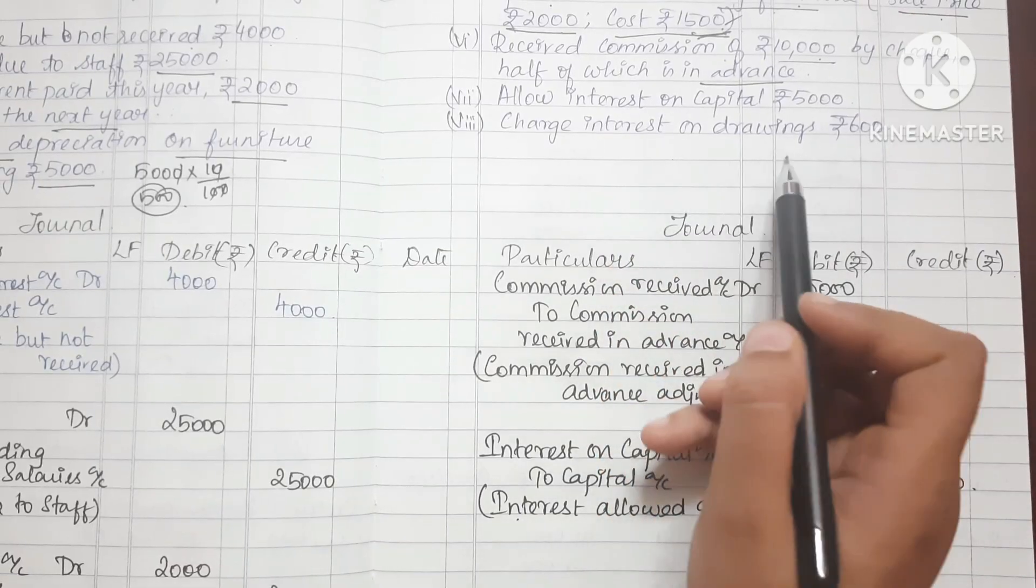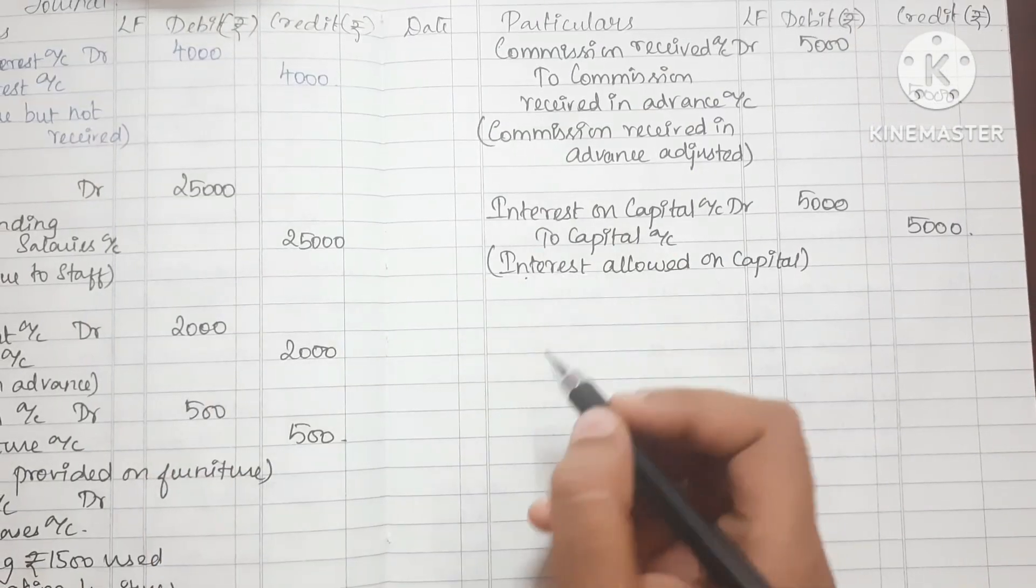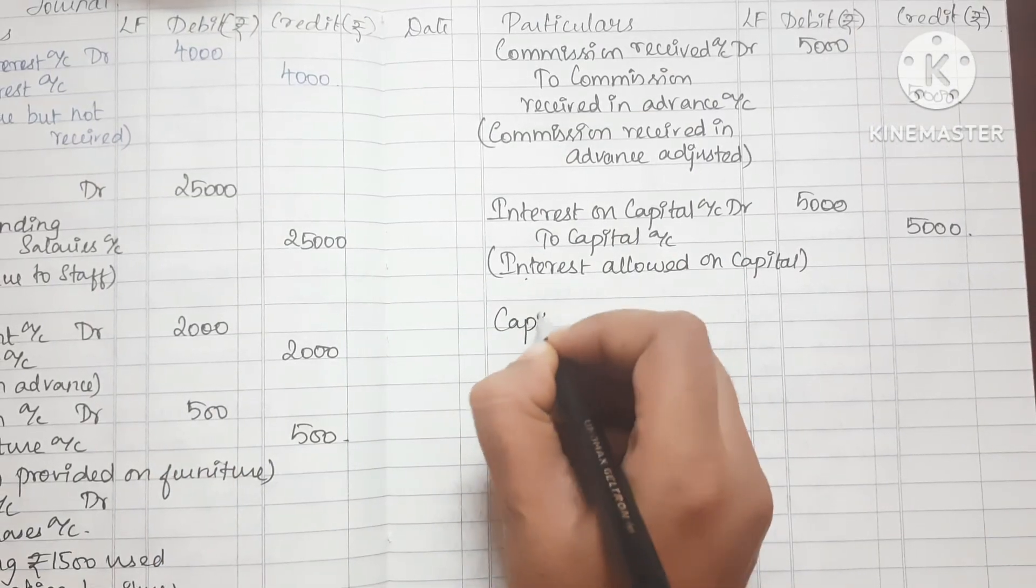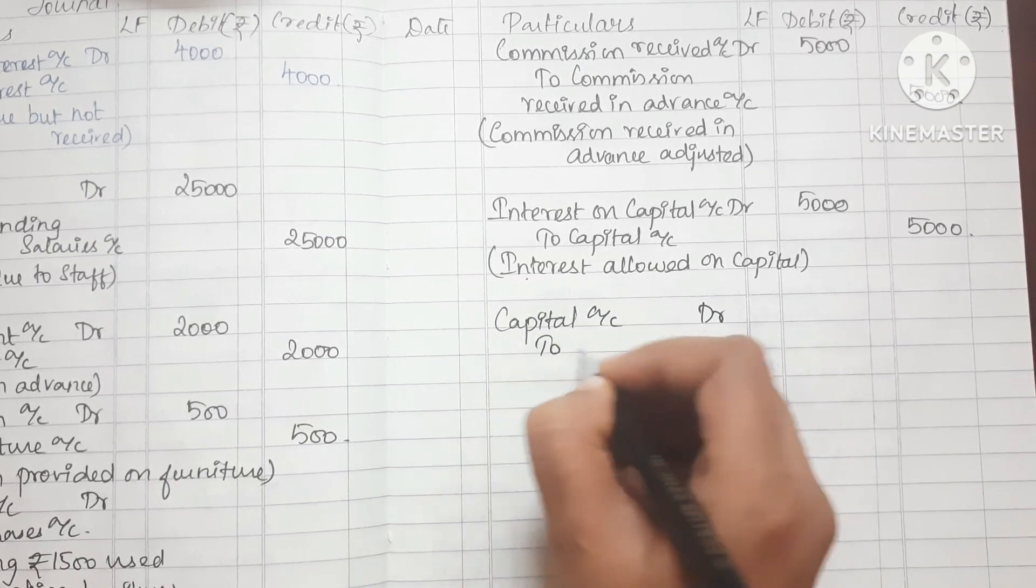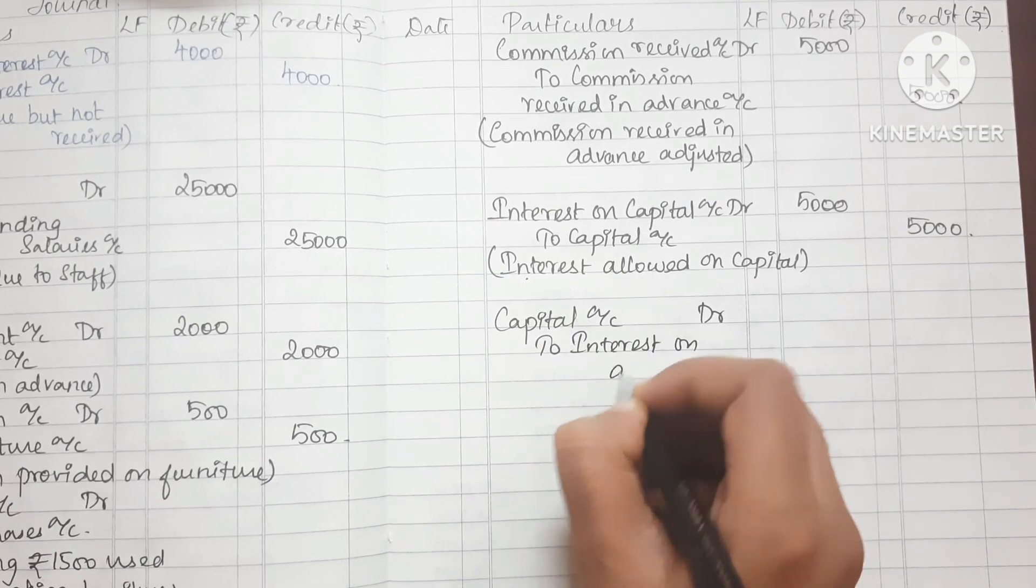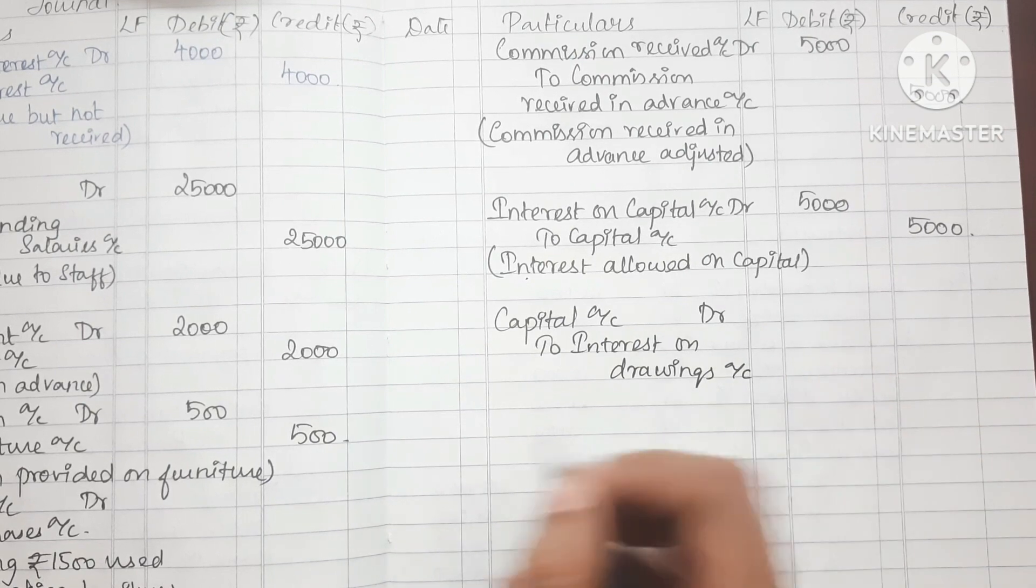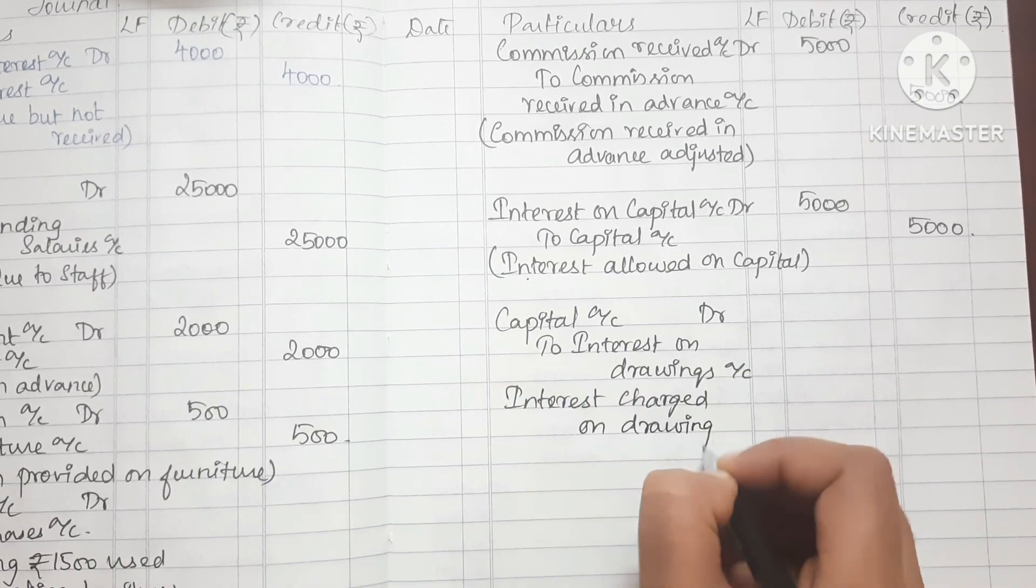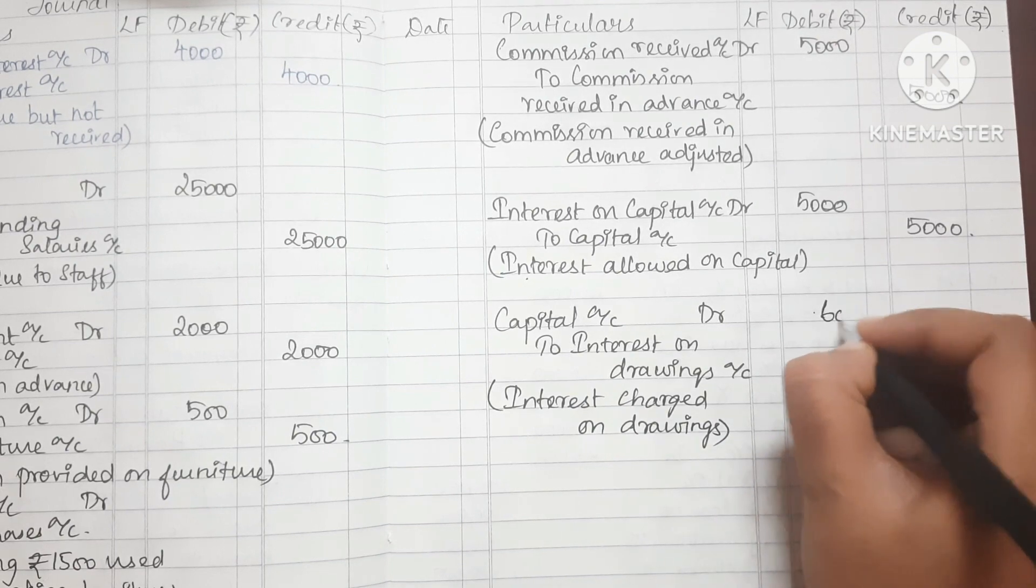Charge interest on drawing Rs.600. How do we enter the entry? Capital account debit to Interest on Drawing. This is our narration, interest charged on drawings. Amount is 600.